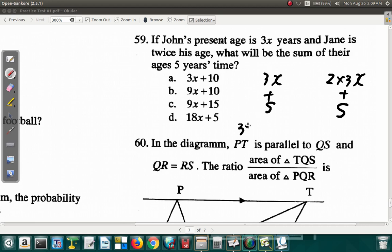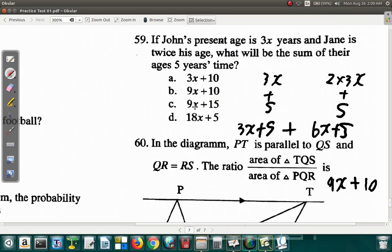3x plus 5 is John's age. 2 times 3x, let's just call it 6x. 6x plus 5 is Jane's age. The sum of their ages, you add them. 3x plus 6x would be 9x plus 5 plus 5. Like terms together. 3x plus 6x would be 9x. Numbers together. 5 plus 5 is 10. 9x plus 10. B. Question 59 is B.